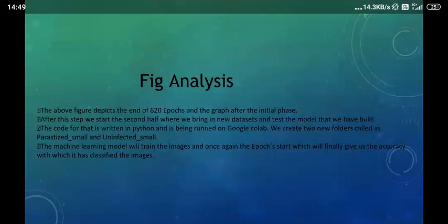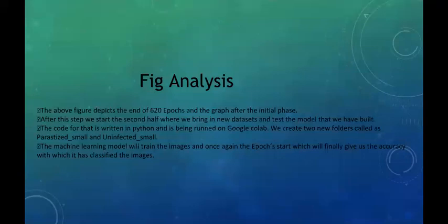The figure depicts the end of 620 epochs and the graph after the initial phase. In the second half, a new dataset is brought in to test the model that was built. The code is written in Python and run on Google Colab. Two new folders — infected small and uninfected small — are created. The machine learning model trains on the images, the epochs run again, and we ultimately obtained 98% accuracy in classifying the images.